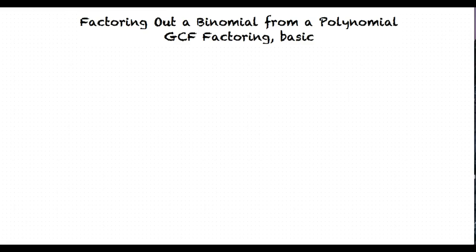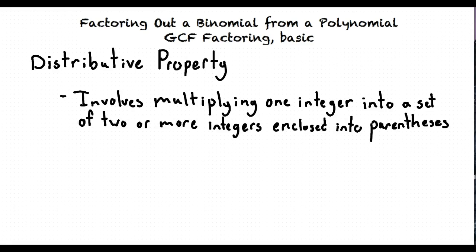This is similar to the last lecture on factoring out monomials from a polynomial. For this lecture, we'll be using the distributive property. Since the distributive property involves multiplying one integer into a set of two or more integers enclosed in parentheses, the property allows us to take out a common factor between two integers.